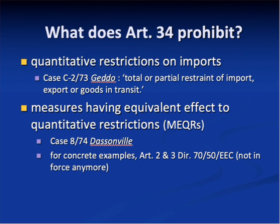You will want to start to build up a list of types of measures having equivalent effect to quantitative restrictions in your notes. One place to start, along with the textbooks, is Directive 70/50 EEC. It's no longer in force, but it'll give you an idea. Here are some examples: labelling rules, campaigns to promote national products, price fixing rules — basically non-tariff barriers that have the same effect as quotas, anything where there is a regulatory divergence between two member states.